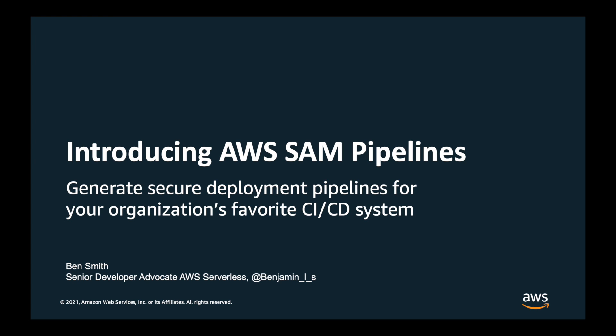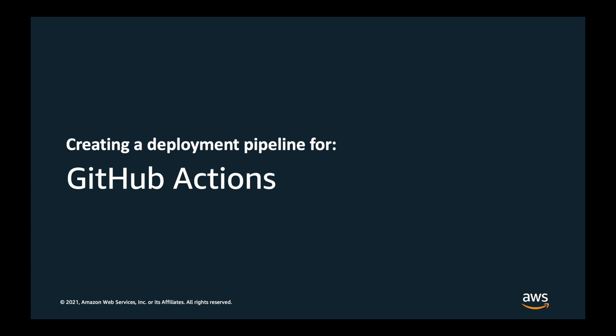Hello and welcome. This is a quick introduction video to AWS SAM Pipelines. SAM Pipelines is a new capability of the AWS Serverless Application Model CLI, otherwise known as SAM CLI. It makes it easier to auto-generate secure continuous integration and deployment pipelines for your organization's CI-CD system. In this video, I show how to use AWS SAM Pipelines to create a deployment pipeline for GitHub Actions.